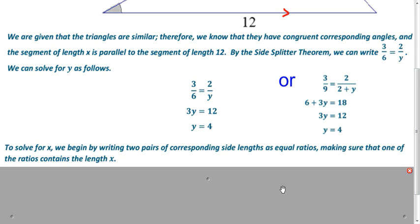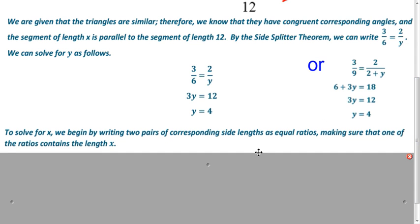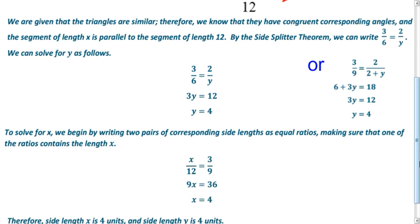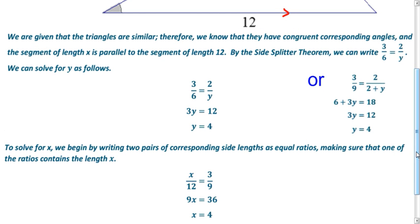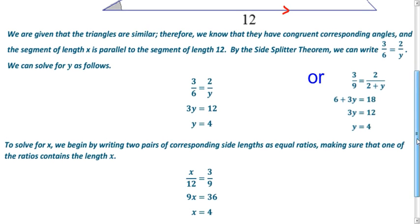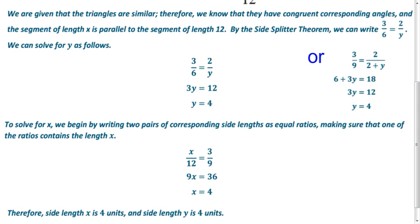To find x now, a similar idea as we've done the right-hand side here. So, we're doing corresponding side lengths. Let's say we have x over 12 and 3 over 9. And so, cross products, you get 9x is 36. Divide by 9, you get 4. So, there are our answers.